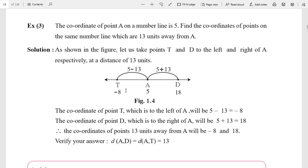The coordinates of point A on the number line is 5. The answer will be two points, because we can go left or right of the number line. 13 units away means left or right. So we can take points T and D to the left and right of A respectively, at a distance of 13 units.